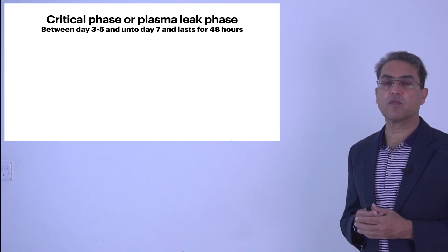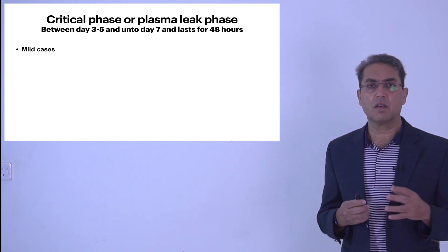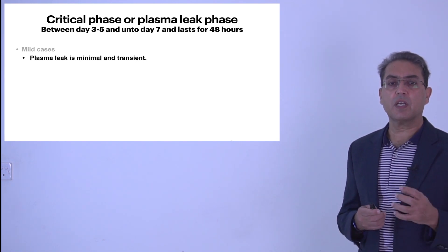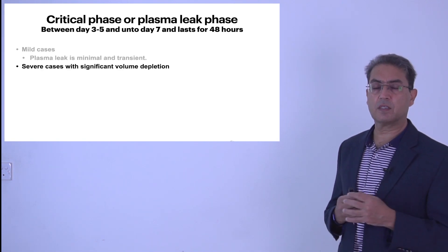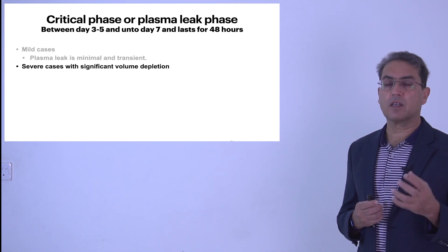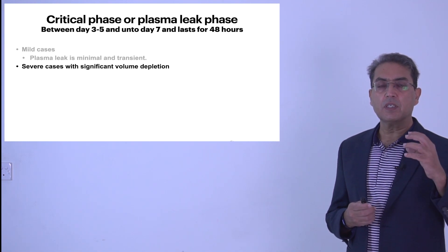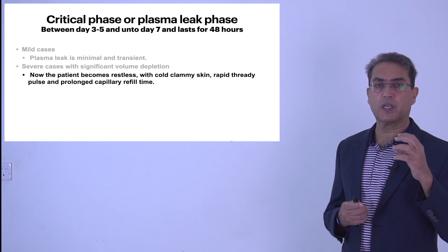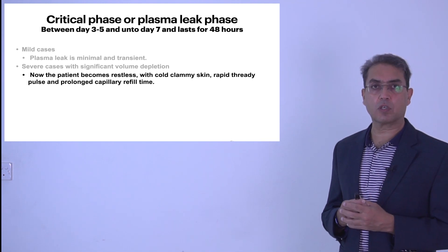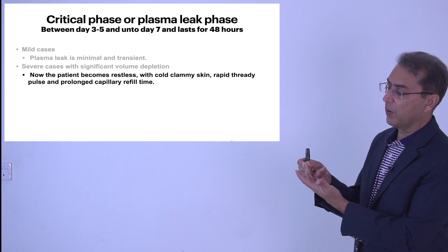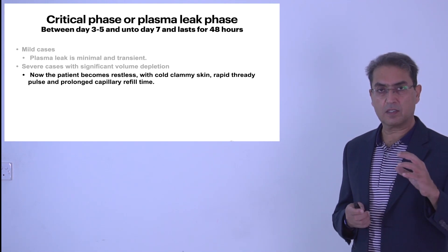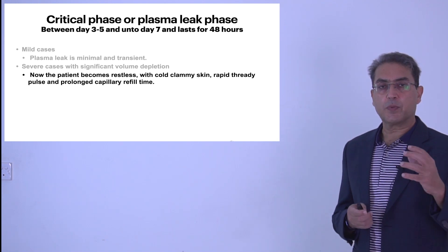In mild cases the leakage is minimal and transient, and the patient recovers. But if the patient has a severe critical phase, there is a large amount of volume leakage resulting in significant volume depletion and circulatory failure. In the critical phase the patient becomes restless due to hypoperfusion, there is cold clammy skin, rapid thready pulse, and prolonged capillary filling time. If you press the fingertip pulp and see delayed capillary refill, this indicates poor peripheral perfusion. The pulse pressure is narrow.